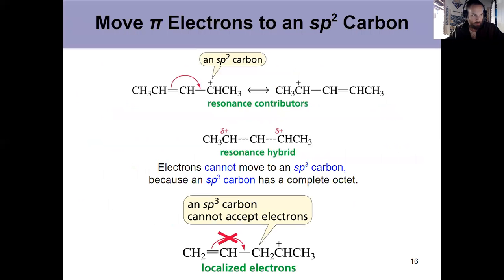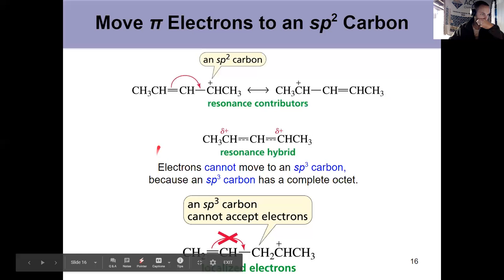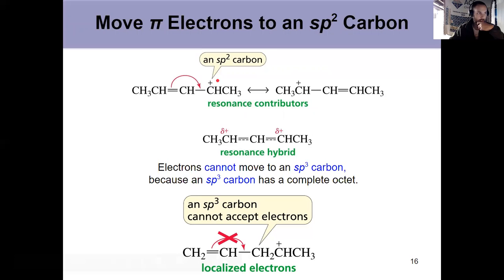Let's look at a couple of examples. What works up here? Well, this is sp hybridized. So for a carbocation, I can move this pi electron density over, move the carbocation from here to here. Two resonance contributors, that's fine to do. Resonance hybrid has a partial bond here, partial bond there, and a slight partial positive on each of the carbons because the positive charge exists both here and here simultaneously.